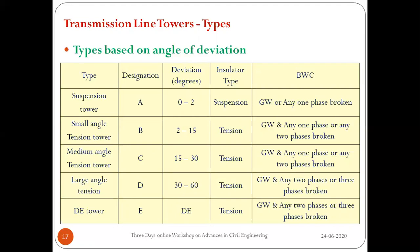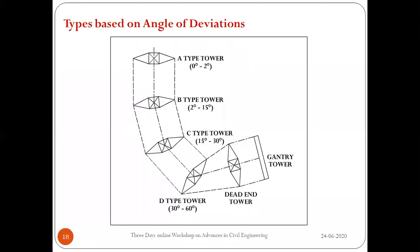Except suspension towers, all other towers use tension-type insulators. A-type towers are placed in straight links where deviation is not greater than 2 degrees. B-type towers are placed between 2 to 15 degree deviation, slightly oriented along the direction of the turn. For a C-type tower with 30-degree deviation, the tower is rotated 15 degrees so that forces are reduced equally on both sides. D-type is the large angle tower and E-type dead end towers are located near substations.